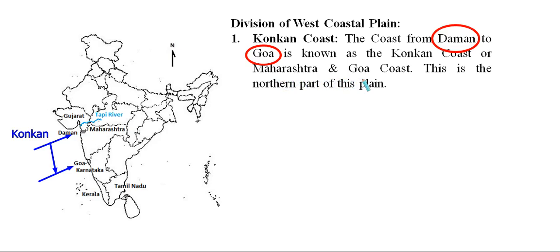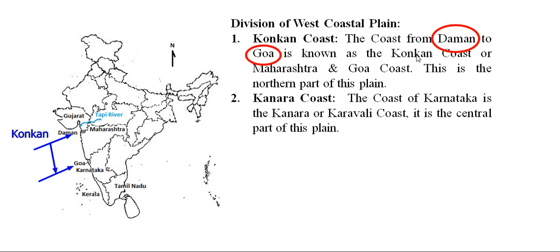The Konkan Coast mainly covers the states of Maharashtra and Goa, and is the northern part of the Western Coastal Plain. The next subdivision is the Kannada or Karavalli Coast — the coast of Karnataka. After Goa, the Karnataka region (except some parts of southern Karnataka) forms this Kannada Coast. It is the central part of the Western Coastal Plain and is also known as the Karnataka Coast.